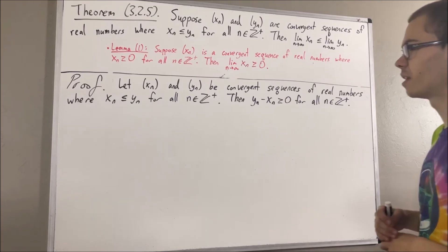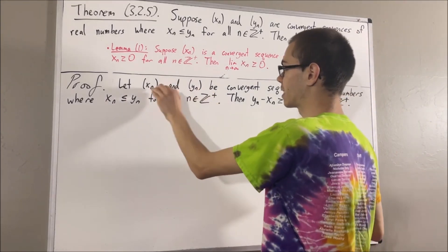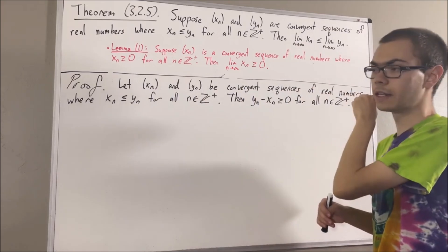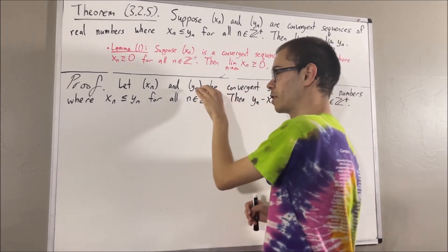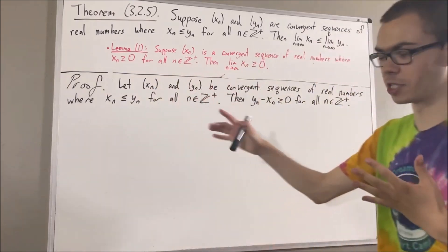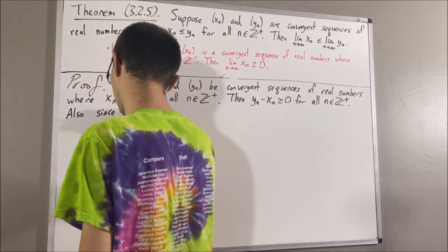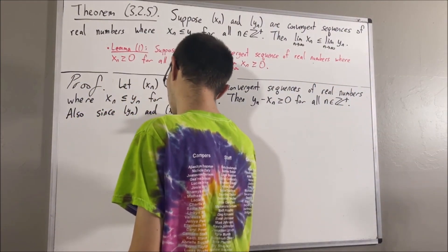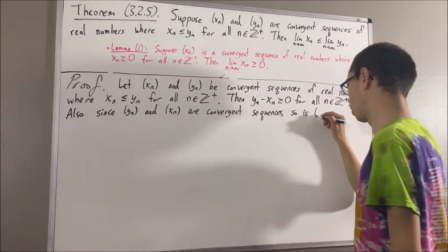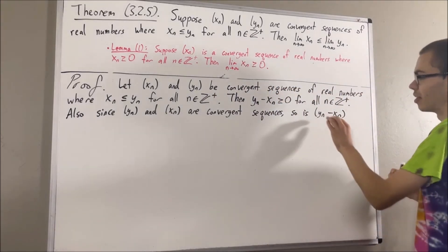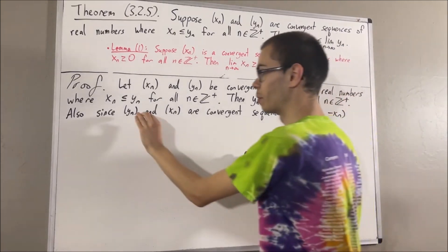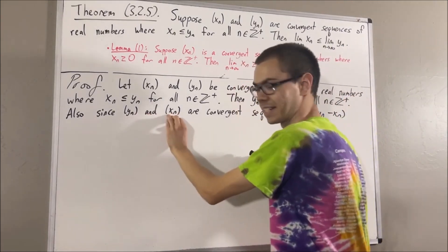Now, since yn and xn are both convergent sequences, this tells us that the difference yn minus xn is also a convergent sequence. And the limit of yn minus xn is equal to the limit of yn minus the limit of xn.